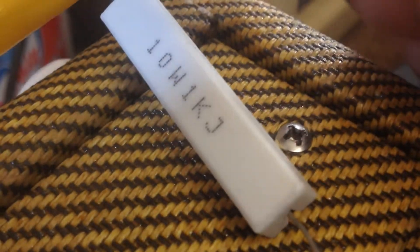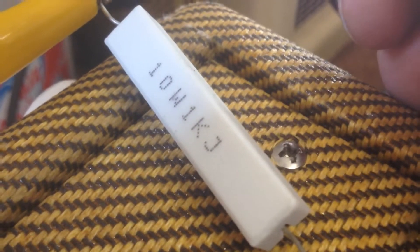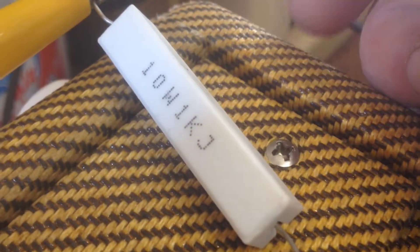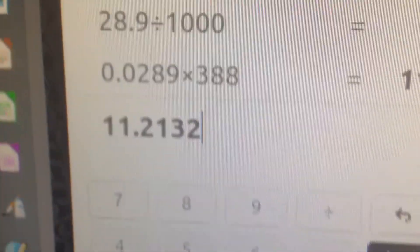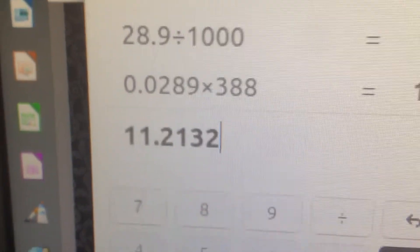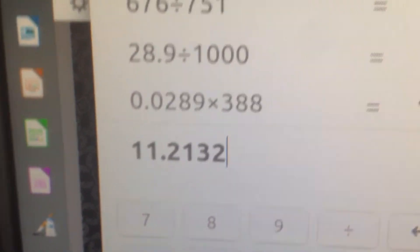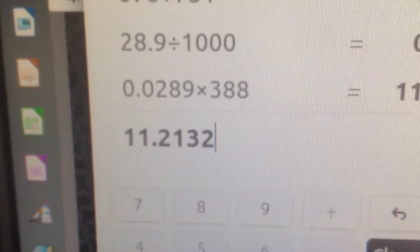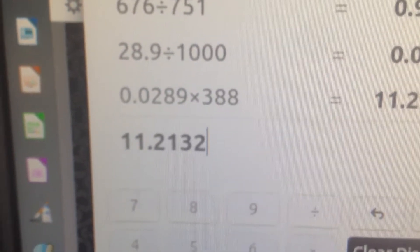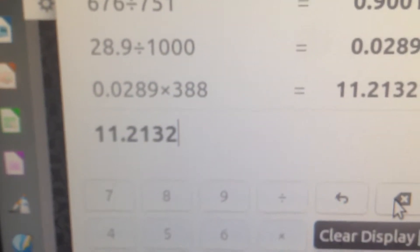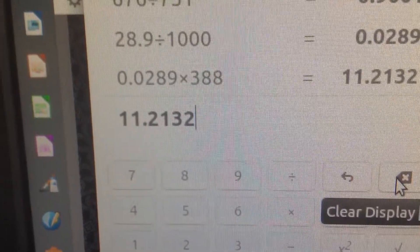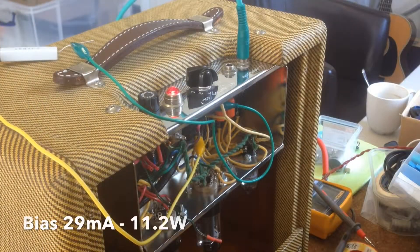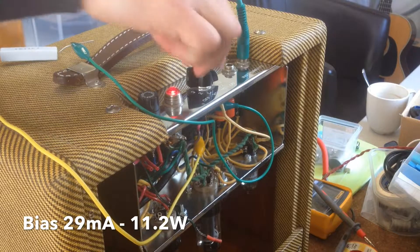I found this 1k 10 watt resistor, we'll put this in and check the bias again and see how it sounds. 28.9, almost 29 volts on the cathode divided by 1k thousand ohms gives us 28, 29 milliamps. Multiplied by 388 gives us 11.2 watts. With the plate dissipation at 11.2 watts it sounds like this at six-and-a-half halfway.